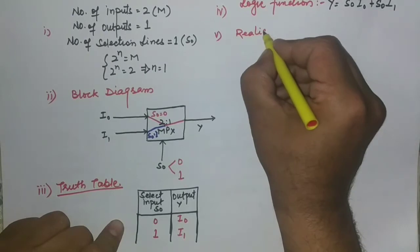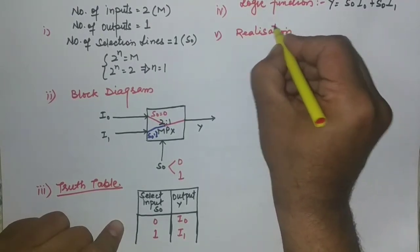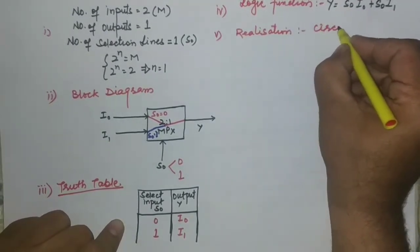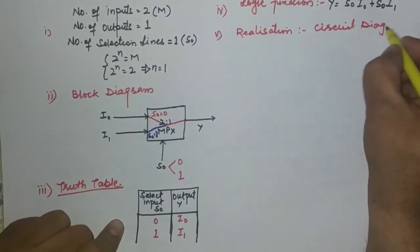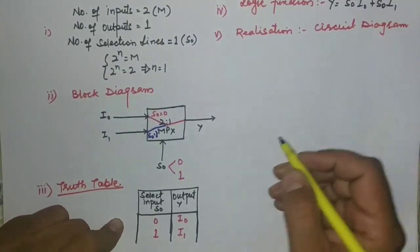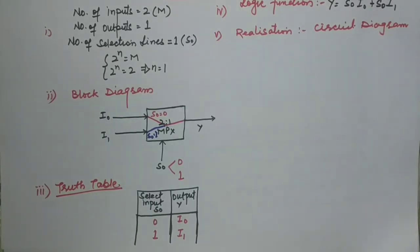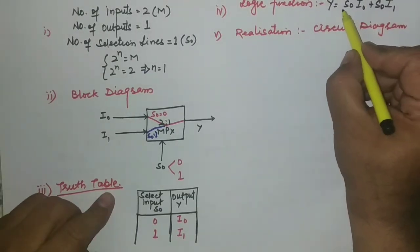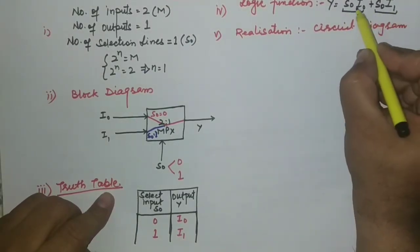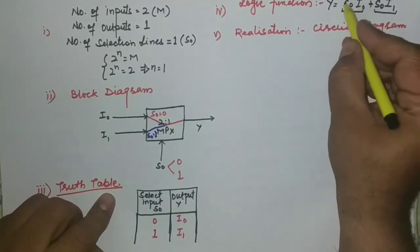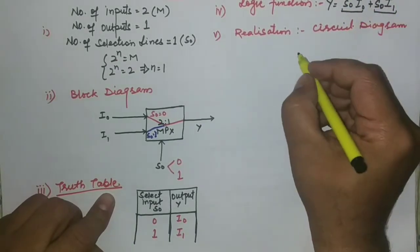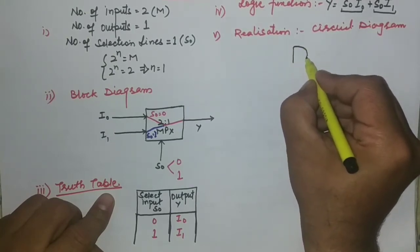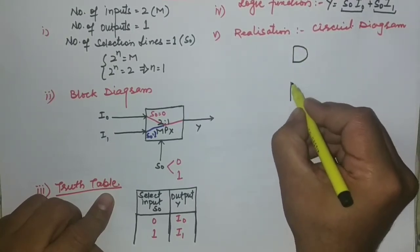The last point is the realization — the circuit diagram. We know that multiplexers can be realized using AND, OR, and NOT gates. Looking at the Boolean function, we require two AND gates: one AND gate for the first term and one AND gate for the second term.